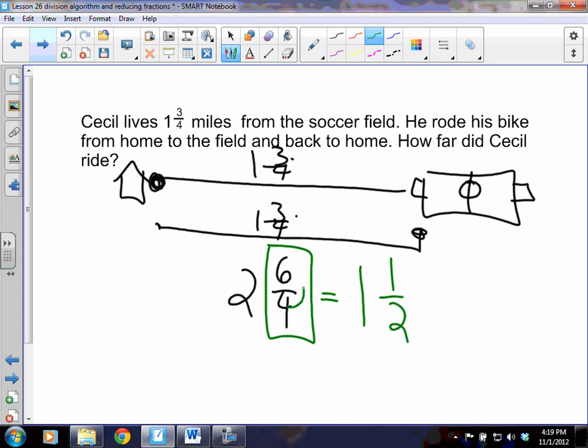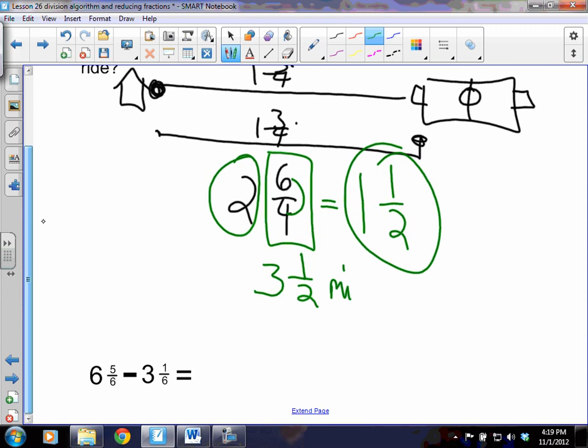6/4 by itself is going to equal 1 and 1/2. So 4 goes into 6 one time, which gives me a remainder of 2. 2 over 4 becomes 1/2. To end the problem, now I'm going to add this back in with our 2, which is going to equal 3 and 1/2. And then we've got to add our label of miles.